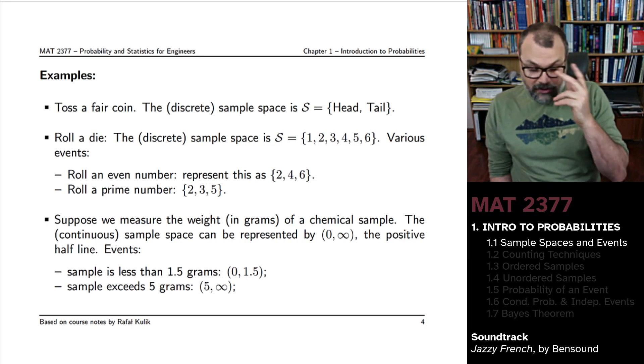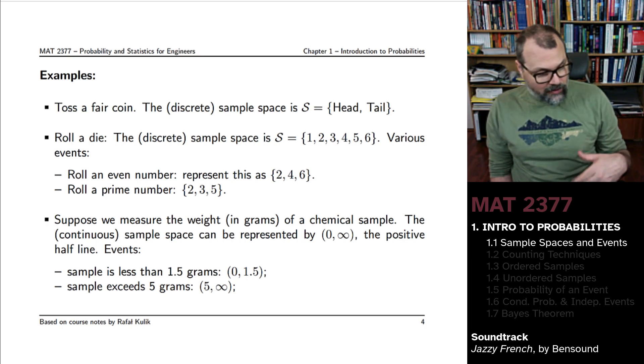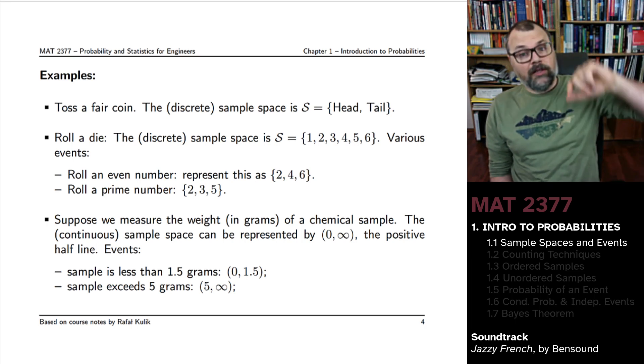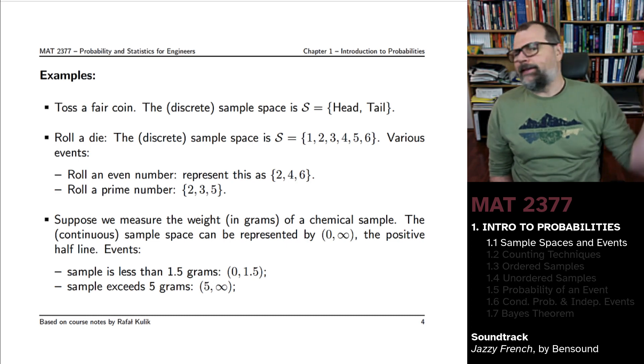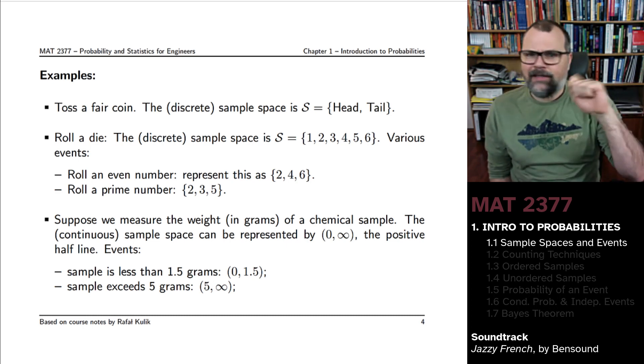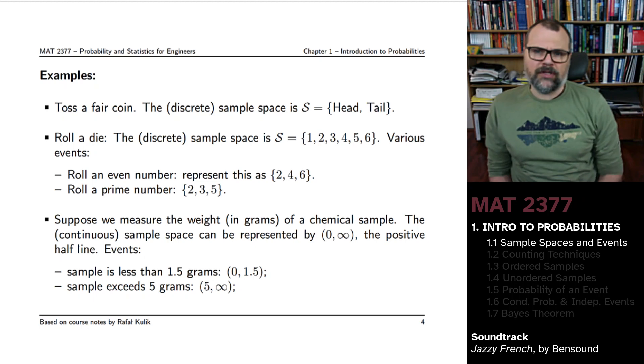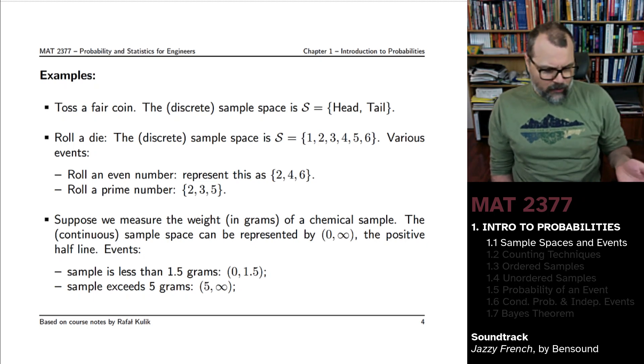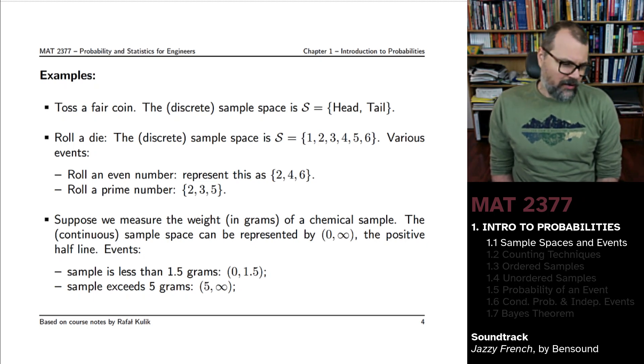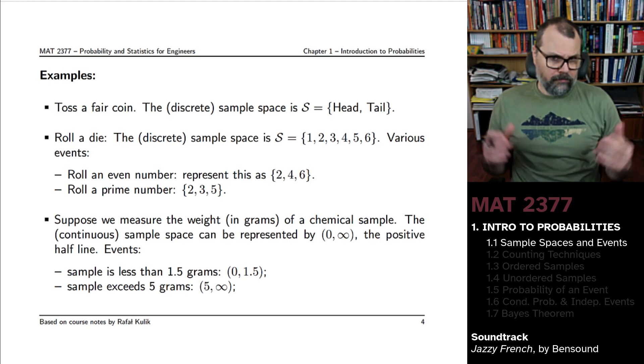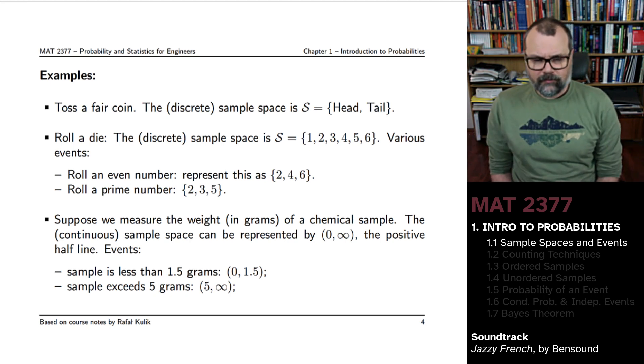Or you can imagine an experiment where you toss the fair coin, and as it's flipping in the air and is about to come down, a seagull sweeps in and takes it in its mouth and disappears with it, and you'll never be able to tell whether it would have been head or tail. So these are possible outcomes, but they're not really possible outcomes.